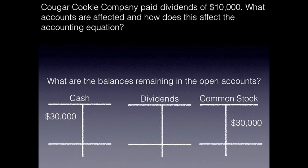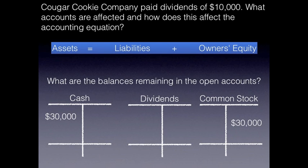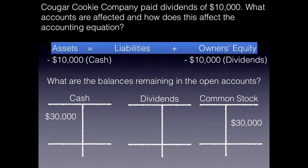Cougar Cookie Company paid dividends of $10,000. What accounts are affected and how does this affect the accounting equation? This time cash is not going up — cash is actually going down by $10,000, which decreases our total assets. You also have to remember what dividends affect: dividends affect retained earnings, which are under owner's equity. If we pay dividends, that reduces our retained earnings, which reduces owner's equity — so it's a reduction of owner's equity. The accounting equation remains balanced: one side went down $10,000 and the other side went down $10,000.